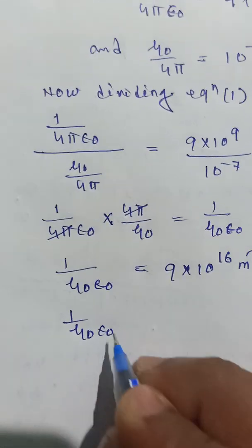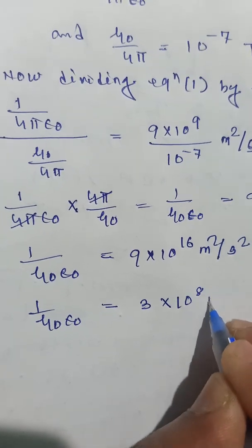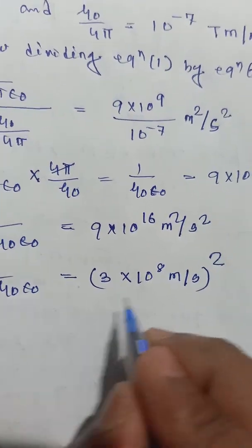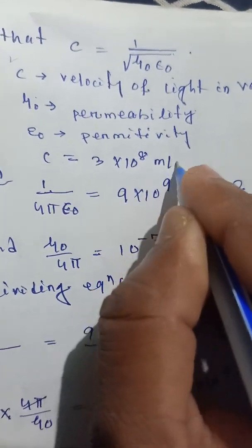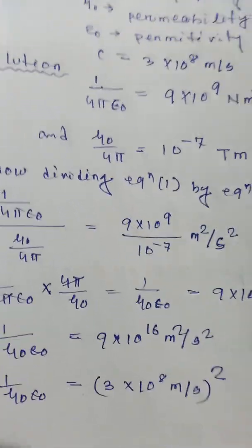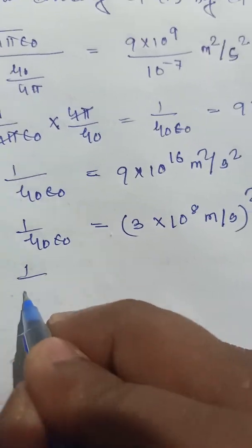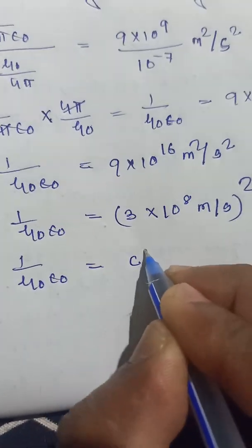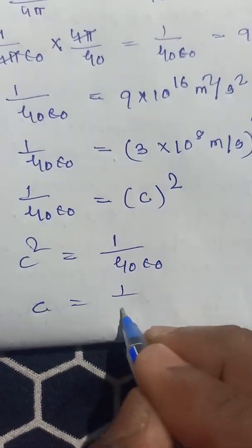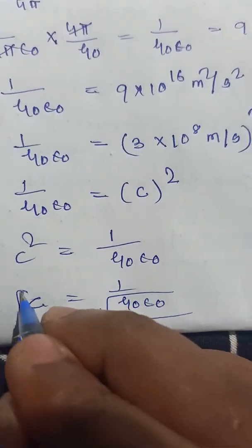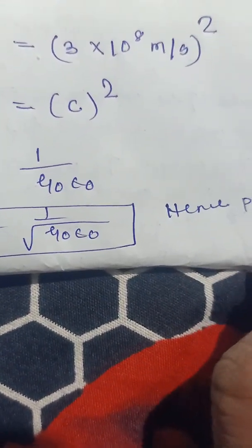This can also be written as (3×10⁸ meter per second) squared. So c equals 3×10⁸ m/s, which is the velocity of light in vacuum. Therefore c² = 1/(μ₀ε₀), which means c = 1 over root of μ₀ε₀. Hence proved.